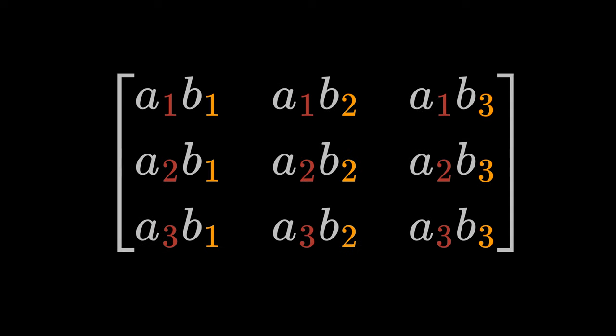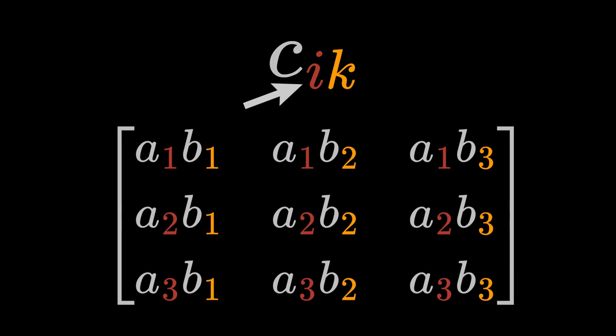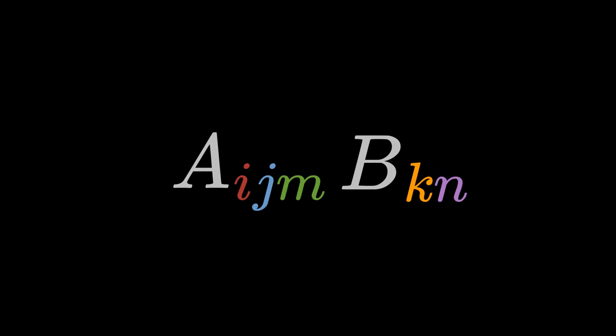By definition, the first index, the index I, numbers the rows of the matrix, and the second index, the index K, numbers the columns. The tensor product does not necessarily have to be between two tensors of the same order.